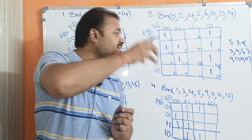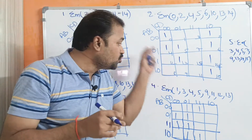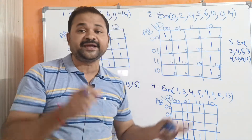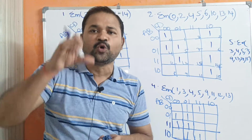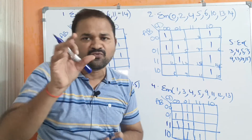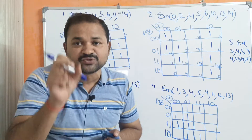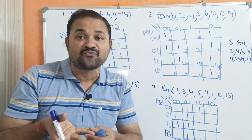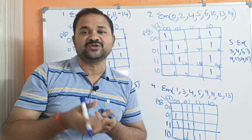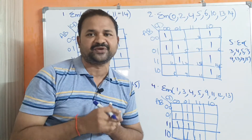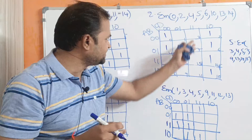Our major aim should be that the group should contain more number of 1s. If the group contains more number of 1s, then that term should contain less number of variables. That is our major motive here. So first let us simplify this first expression.